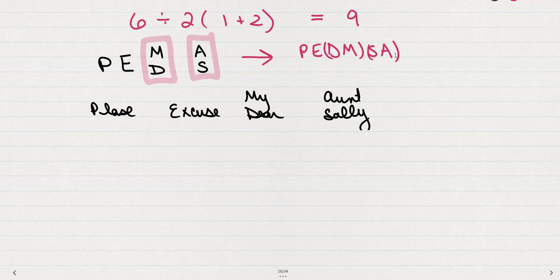In this problem we see a division before we see a multiply. So it's actually going to be parenthesis, exponent, divide, and then multiply.